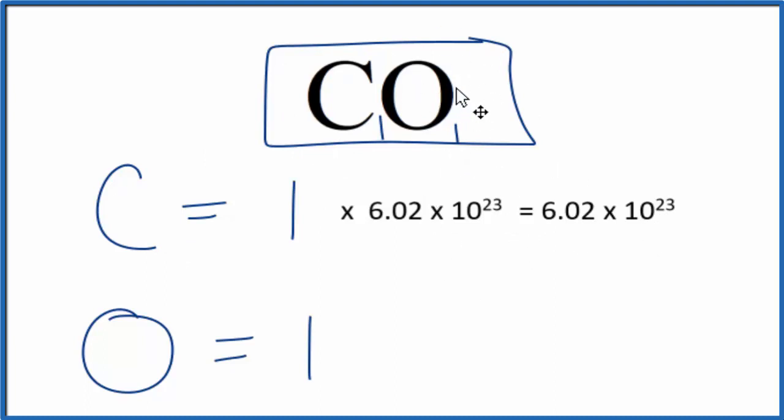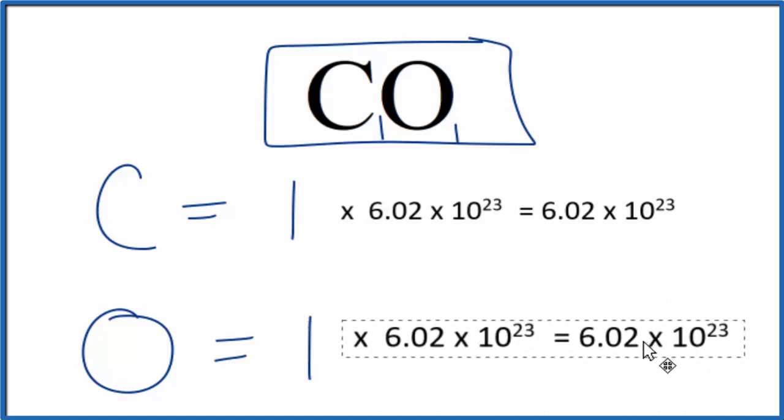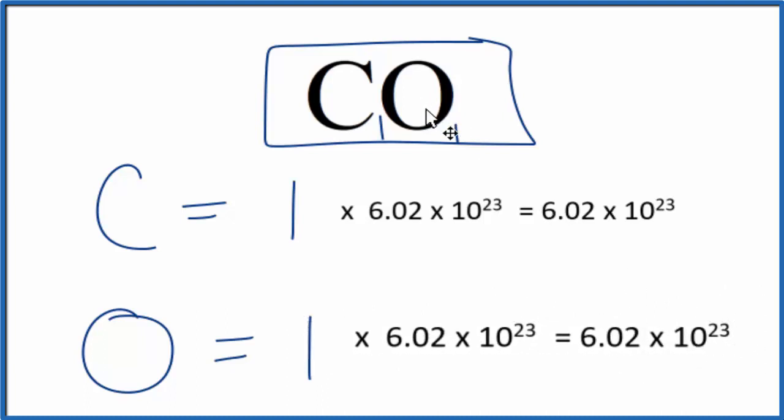Same thing for oxygen. If you were asked the number of oxygen atoms in one mole of carbon monoxide, you'd multiply that by Avogadro's number. And that would give you 6.02 times 10 to the 23rd atoms of oxygen in one mole of carbon monoxide.